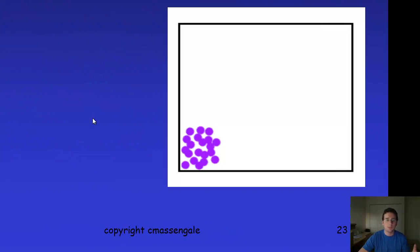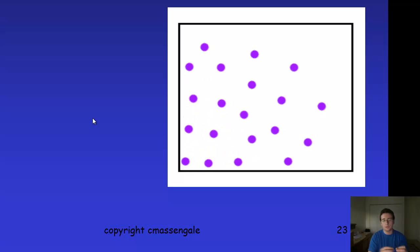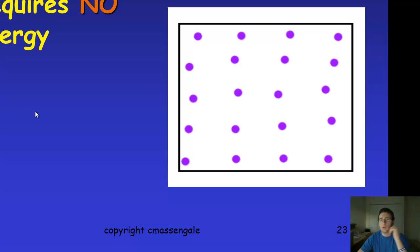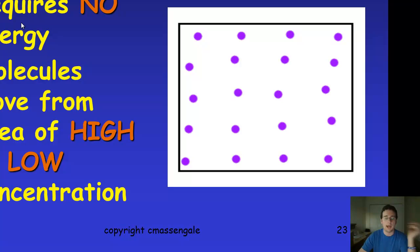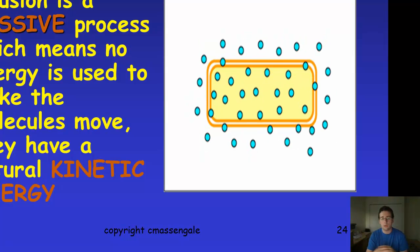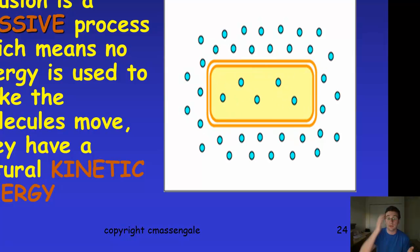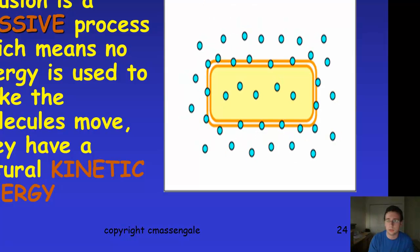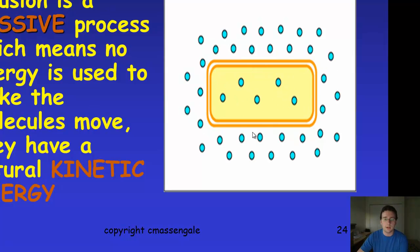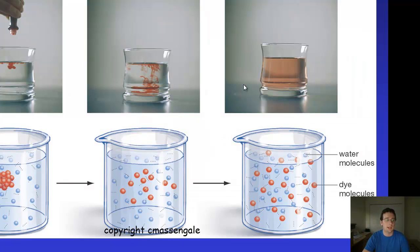Diffusion is when particles have this tendency to move from an area of high concentration to low concentration to reach equilibrium within the system. This process requires no energy because it uses the existing kinetic energy of the particles. It's a passive process — molecules move from a high to low concentration area. For example, oxygen molecules on the outside will passively move in until there are just as many inside as outside.